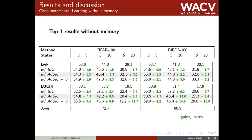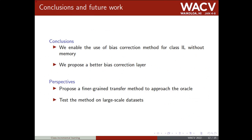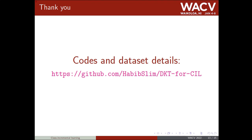Please see the paper for more results and ablation studies. To conclude, in this paper we enable the use of a bias correction layer in a memoryless setting using knowledge transfer between reference and target datasets, and we propose an adaptive bias correction layer that better tackles imbalance in classification scores. In the future we will propose a finer-grain transfer method to approach results of the Oracle, and we will test our approach on large-scale datasets. Code and dataset details are publicly available in the GitHub repository. Thank you for your attention.